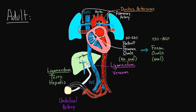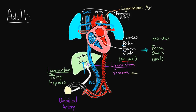Moving onwards, we have the ductus arteriosus. We know that shortly after birth, this is going to tighten up — the muscles constrict when they face high oxygen levels, and they sense the low prostaglandins. This ductus arteriosus then really doesn't have this name anymore. In an adult — I'll give you a moment to guess as I write it out — again, ligamentum. We're going to call this one ligamentum arteriosum. So you're getting the hint for how we name these things.